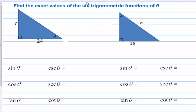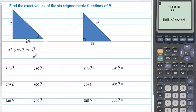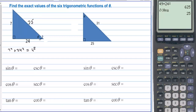Find the exact values of the six trigonometric functions of theta. We have theta in the bottom right-hand corner. The opposite side is 7 and the adjacent side is 24. We need to get the value of the hypotenuse. We have 7 squared plus 24 squared equals the hypotenuse squared. 7 squared is 49, and 49 plus 24 squared gives us the answer; taking the square root gives us 25. So the hypotenuse is 25.